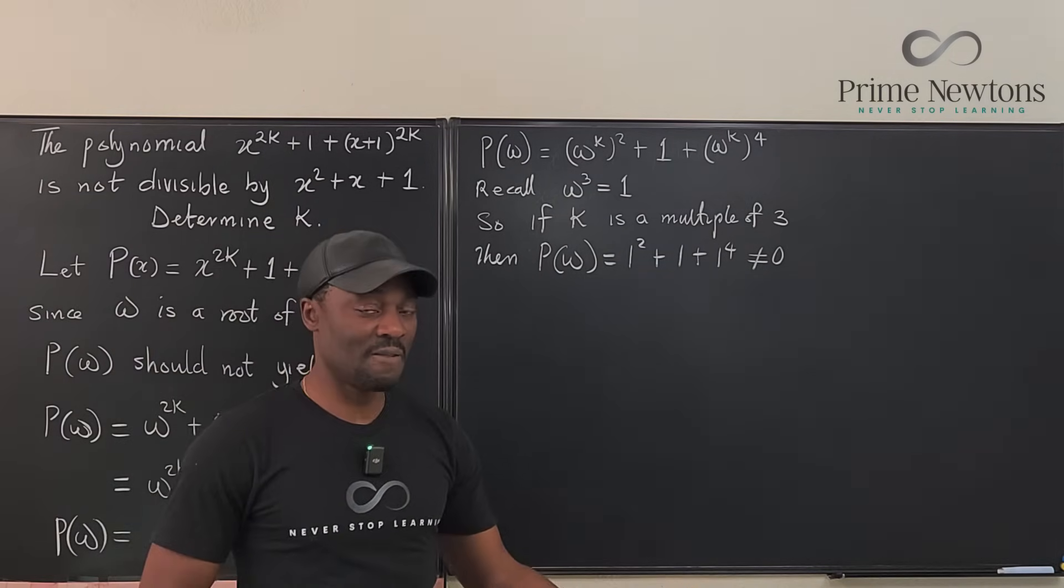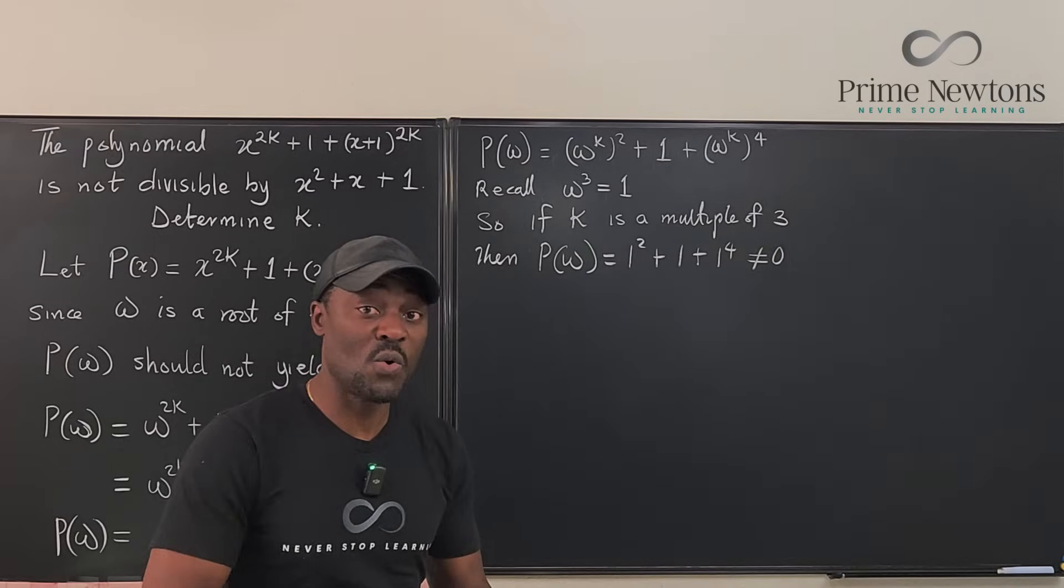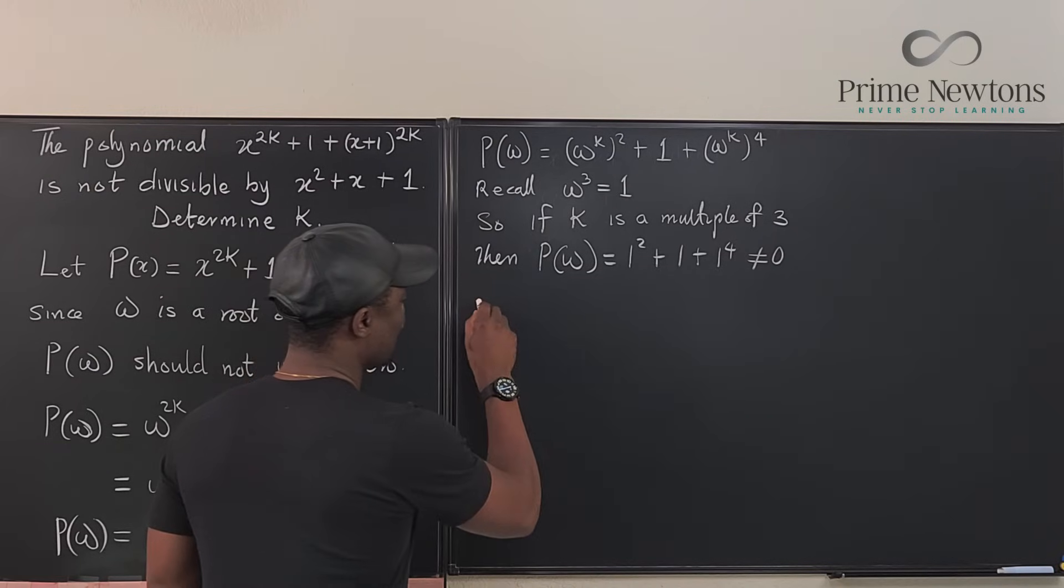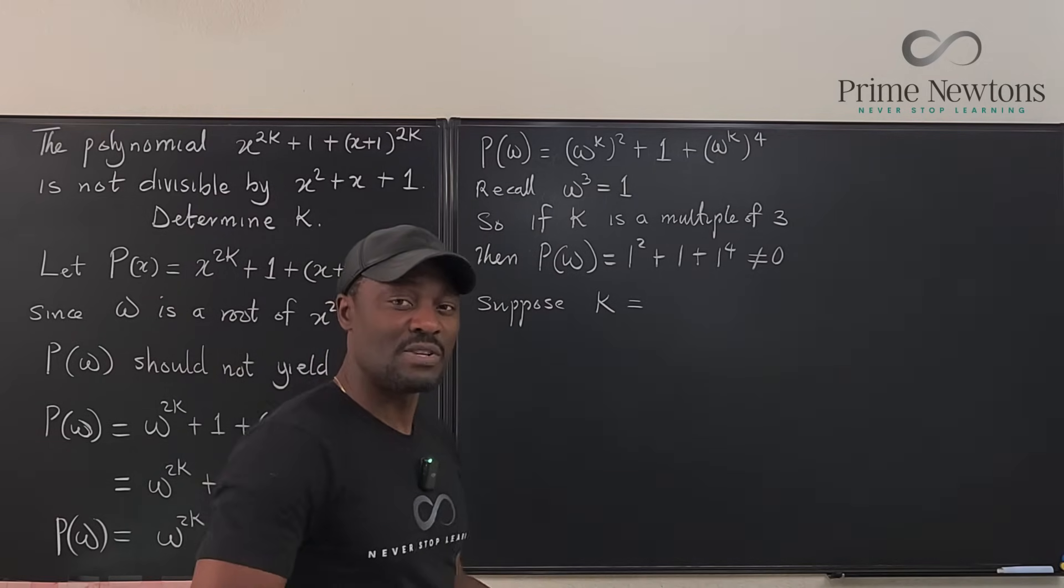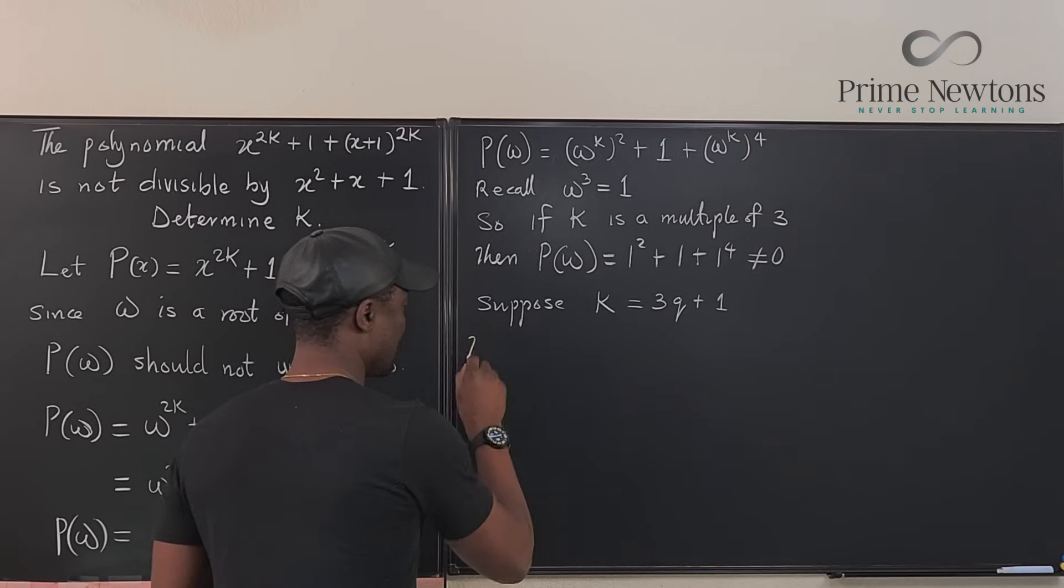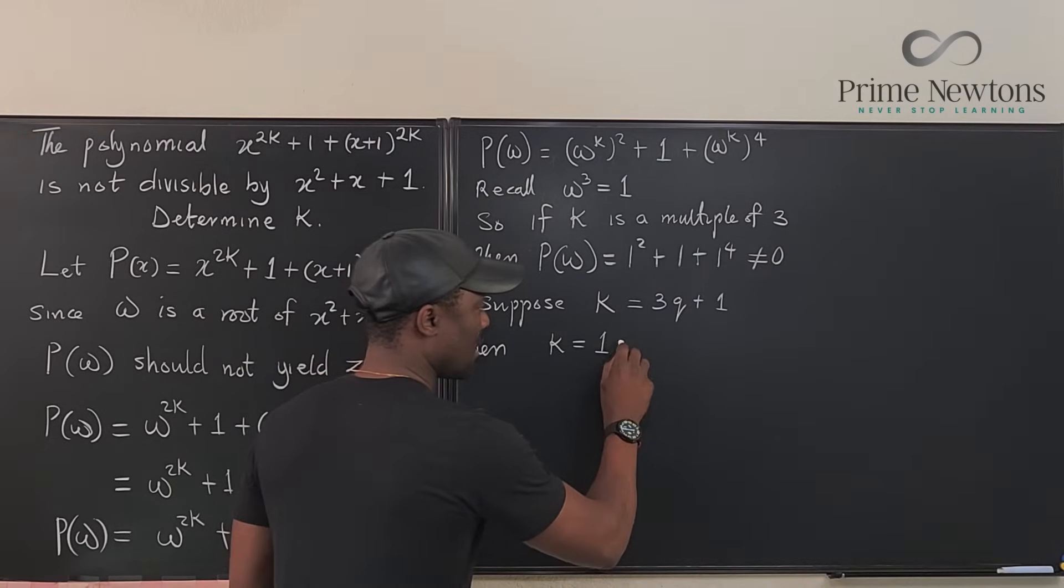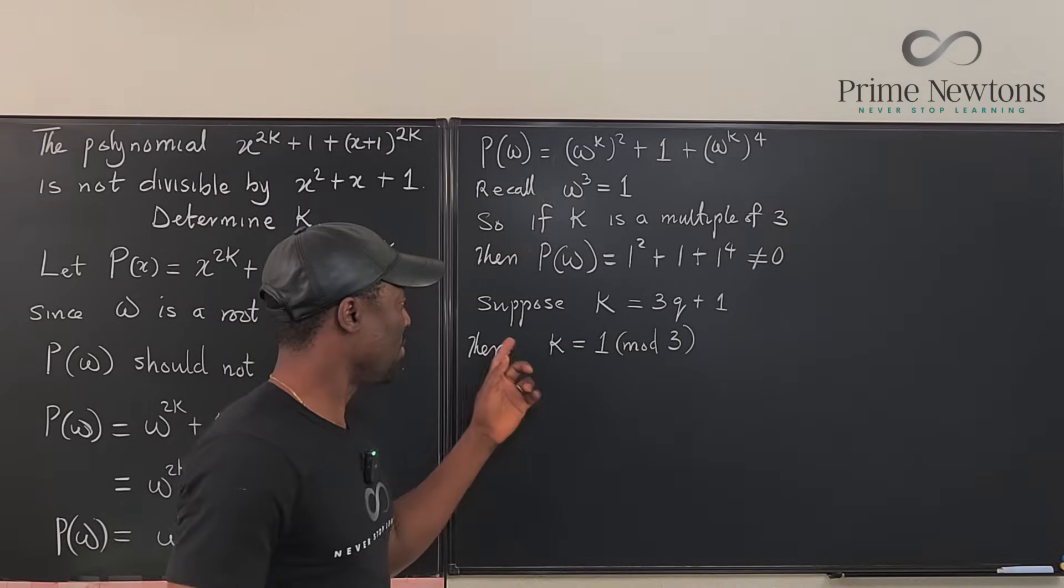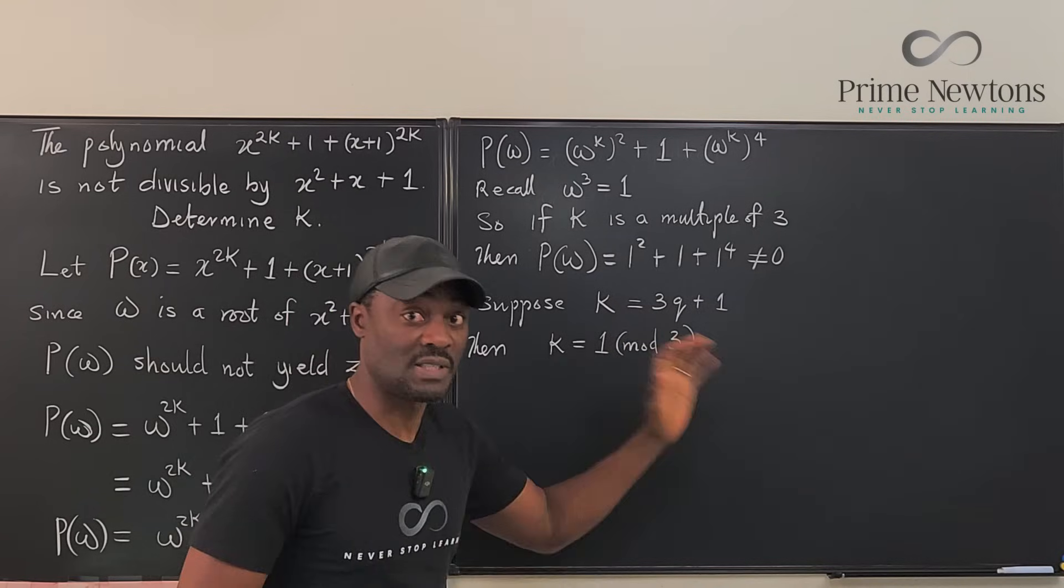What if k is not a multiple of 3, but it leaves a remainder? Remember, if anything is not a multiple of 3, when you divide it by 3, it's going to have a remainder of 1 or a remainder of 2. Now, suppose k is some number that leaves a remainder of 1 when divided by 3. Let's call it 3q plus 1. Then k will be equal to 1 mod 3. That is, it will leave a remainder of 1. Suppose k is some number like this. That is, 3 times 0 plus 1. So, it could be 1, it could be 4, it could be 7, as long as you have a remainder.